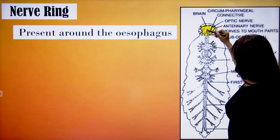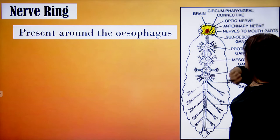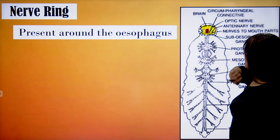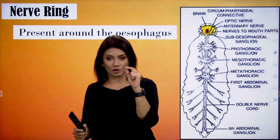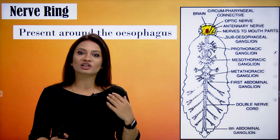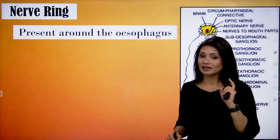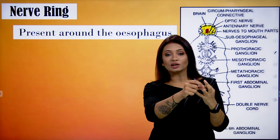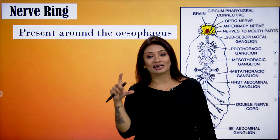In the nerve ring, in the center there is an empty part — like a hole in the middle of a ring. Through that hole passes the alimentary canal of the cockroach, and at that level the part of the alimentary canal passing through is the esophagus.